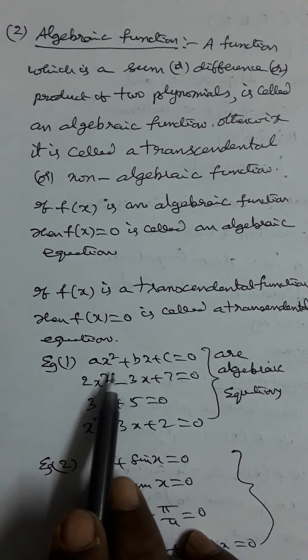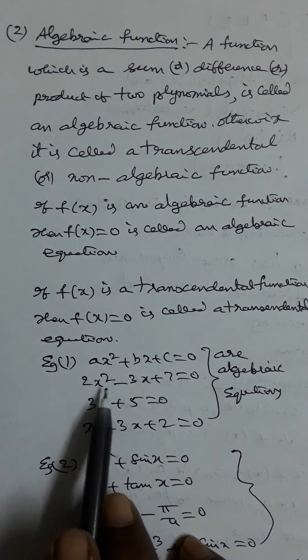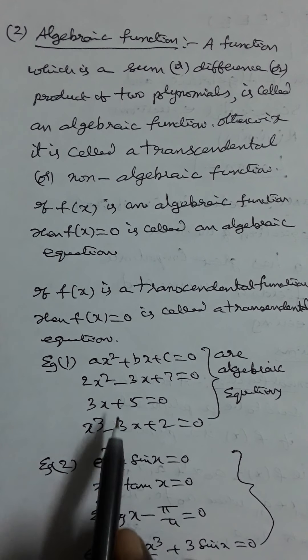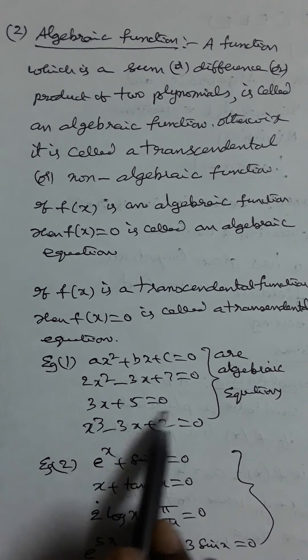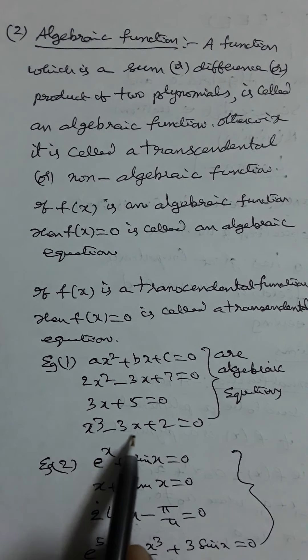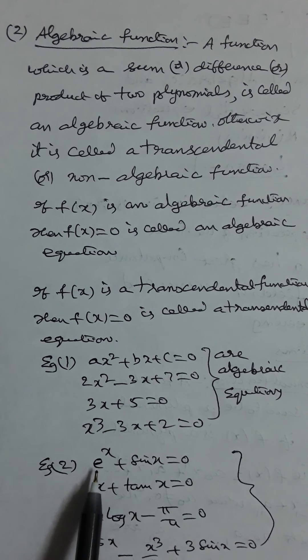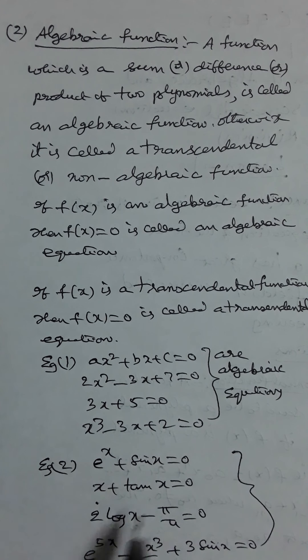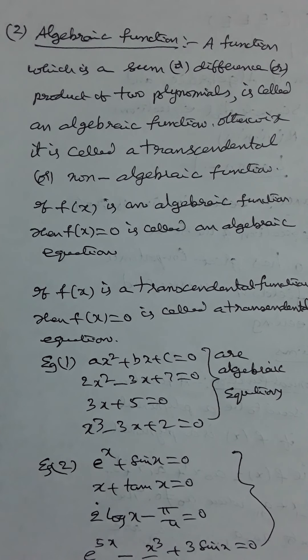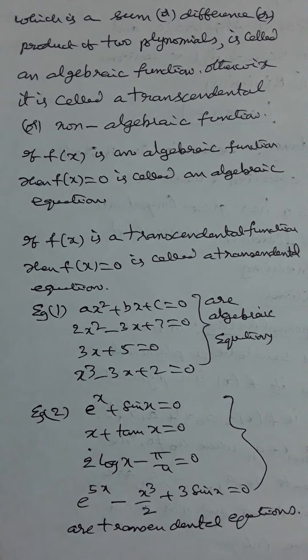Examples of algebraic equations: ax² + bx + c = 0, 2x² − 3x + 7 = 0, 3x + 5 = 0, x³ − 3x + 2 = 0, etc. Examples of transcendental equations: eˣ + sin x = 0, x + tan x = 0, 2a log x − 5/4 = 0, e^(5x) − x³/2 + 3 sin x = 0.